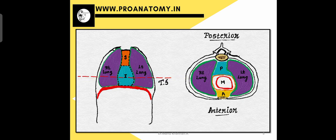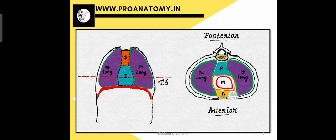If we take a transverse cross section at the level of the inferior mediastinum, we can see how it is divided into three compartments. Here you can see the lungs and the pleura covering them, and on either side we have the mediastinal pleura as boundary. The inferior mediastinum is divided into three compartments: the anterior mediastinum, the middle mediastinum and the posterior mediastinum.